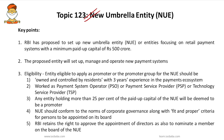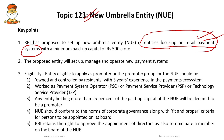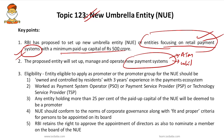The next important topic is the New Umbrella Entity (NUE). Recently, RBI has proposed to set up new pan-India umbrella entities focusing on the retail payment system, with a minimum paid-up capital of ₹500 crore. The proposed entity will set up, manage, and operate new payment systems such as white-label point of service (POS), other related payment systems, and remittance services.